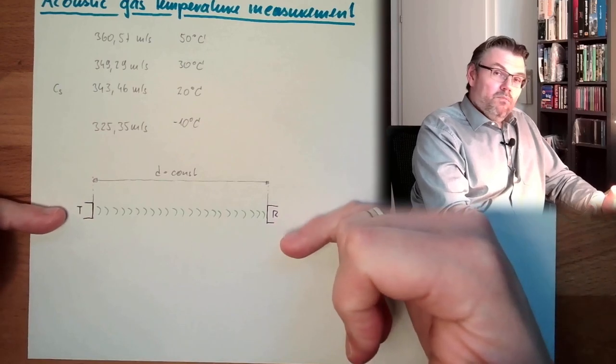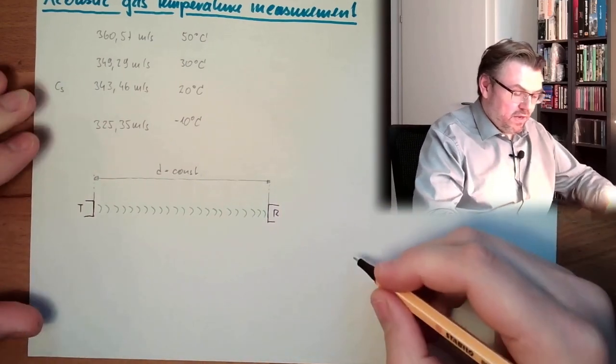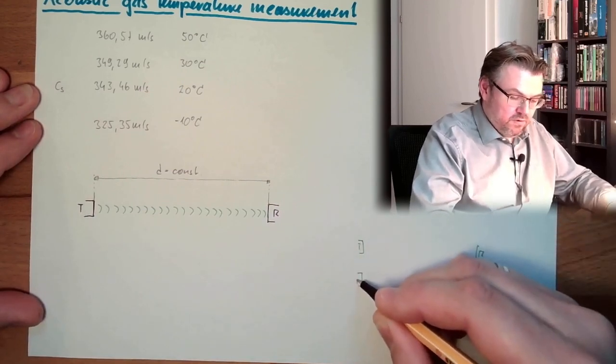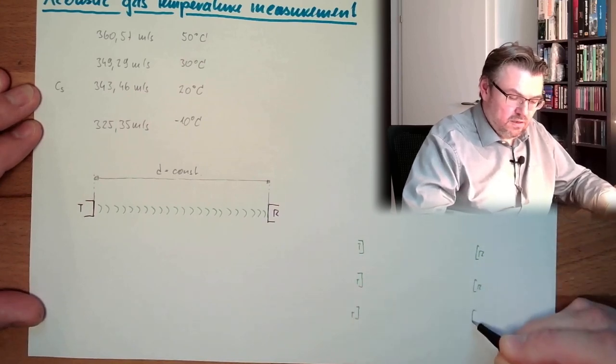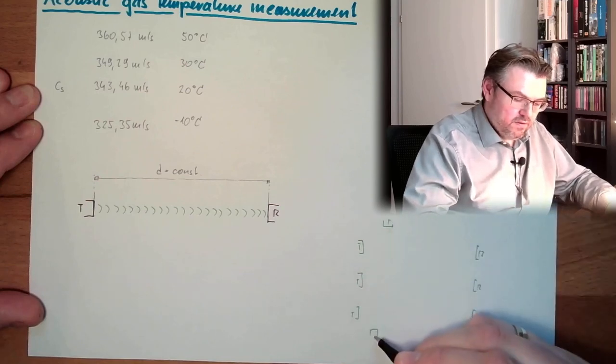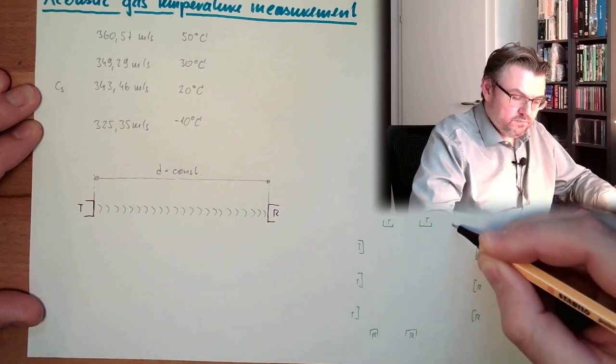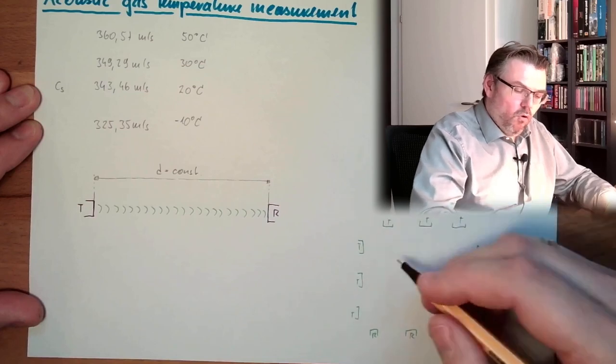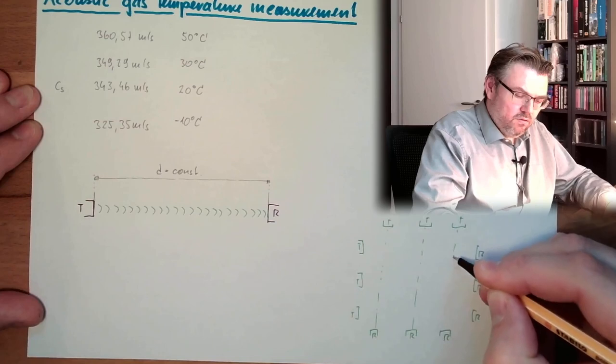And now, if we do not only one measurement, but several measurements. So that we say, okay, we have here transmit and here receive. We have here transmit and here second receive. We have here transmit and here receive. And we have here transmit and here receive. And we know the average temperatures of all those paths, sound paths.